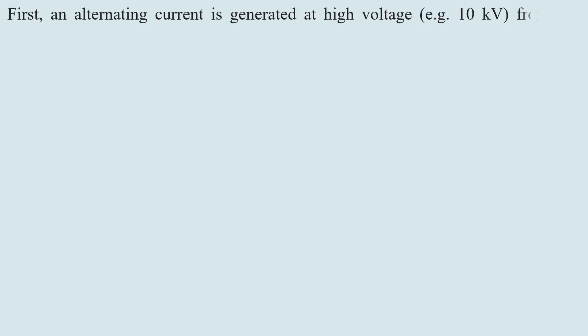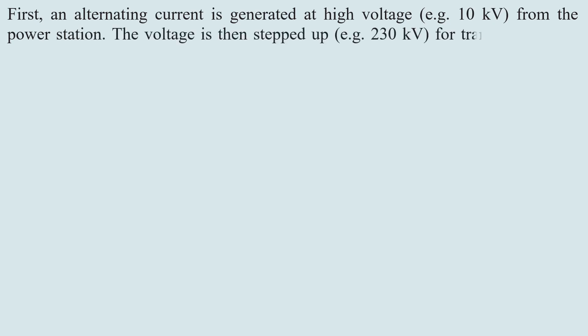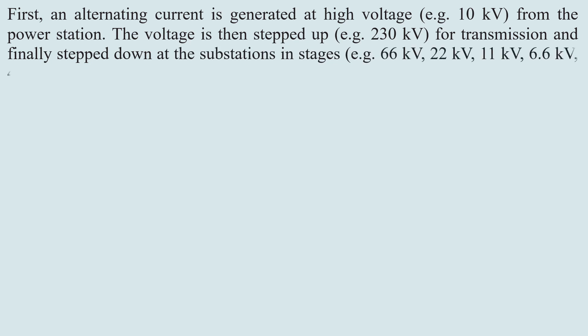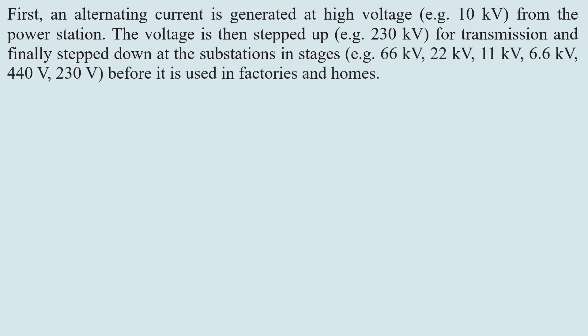An alternating current is generated at high voltage, for example 10 kV, from the power station. The voltage is then stepped up, for example to 30 kV, for transmission, and finally stepped down at the substation in stages — that is, for example, 60 kV, 22 kV, 11 kV, 6.6 kV, 440 V, 230 V — before it is used in factories and homes.